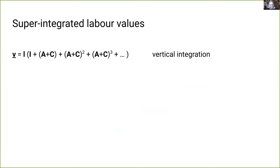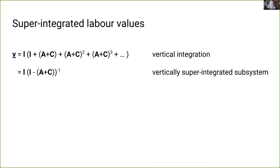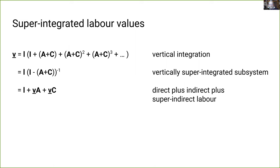By vertically integrating through capitalist households we add more indirect labor to our running total. Continuing to iterate backwards, the additional labor we're now adding isn't technically necessary to produce one unit of corn, but it is necessary in the institutional circumstances of a capitalist economy — because nothing can be produced without simultaneously supplying tribute to capitalist households. In the infinite limit we again get a finite answer, but this answer is different from classical values because it includes labor supplied to produce capitalist consumption goods. The vector v-underscore represents these new kinds of values — super-integrated values.